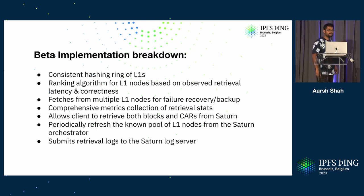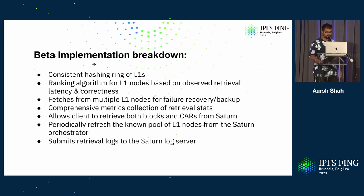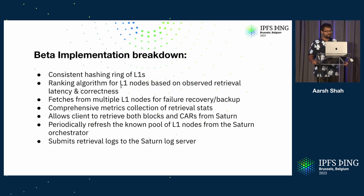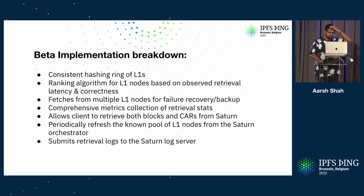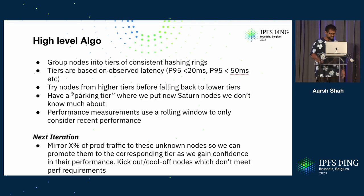So what does the beta implementation do? It does all the consistent hashing of L1s, the ranking for L1s based on observed retrieval latency and correctness. It gives some form of failure recovery and backup by doing fetch attempts to multiple L1 nodes that it knows about. And it has comprehensive metrics collection for both car and block fetches.